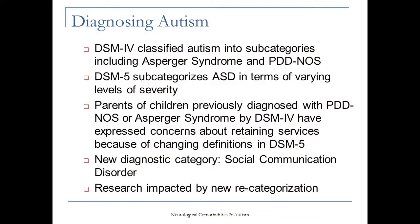Dr. Bauman, can you tell us how autism is currently defined and diagnosed, and what are some of the key differences in diagnostic criteria between DSM-5 and DSM-4? The DSM-4 was initially published in 1994 and we used that set of criteria until the spring of 2013 when the next version came out. In the original 1994 version, it was broken down into subcategories including Asperger's syndrome, PDD-NOS (pervasive developmental disorder not otherwise specified), autism, Rett syndrome, and so forth.